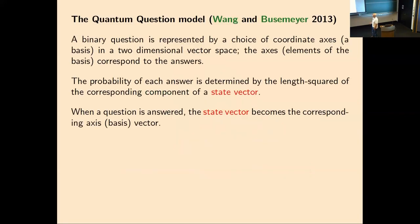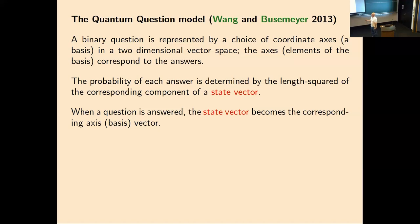This is the idea that Wong and Busmeyer used to model quantum cognition. They said: a binary question is represented by a choice of coordinate axes — a basis in a two-dimensional vector space, where the axes correspond to the answers. The probability of each answer is determined by the length squared of that component, and when a question is answered, the state vector becomes the corresponding axis vector.